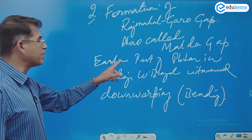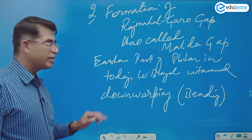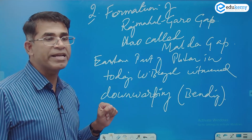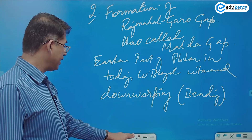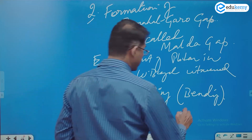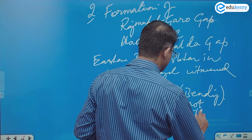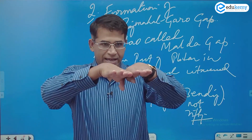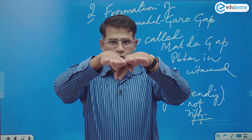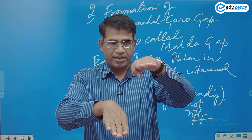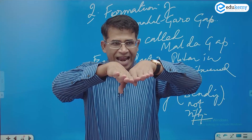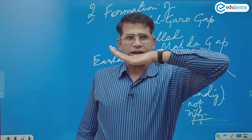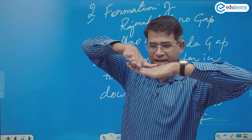Down warping is bending, not rifting. If there's some land and the land breaks and goes inside, that is rifting. But imagine the land not breaking — instead, the land is bending like this. This bending is called down warping.